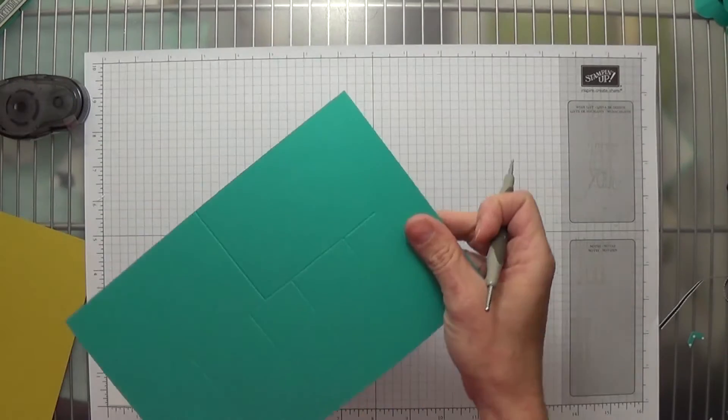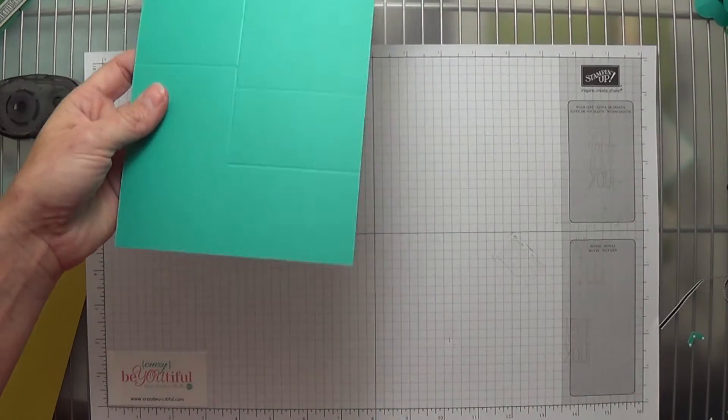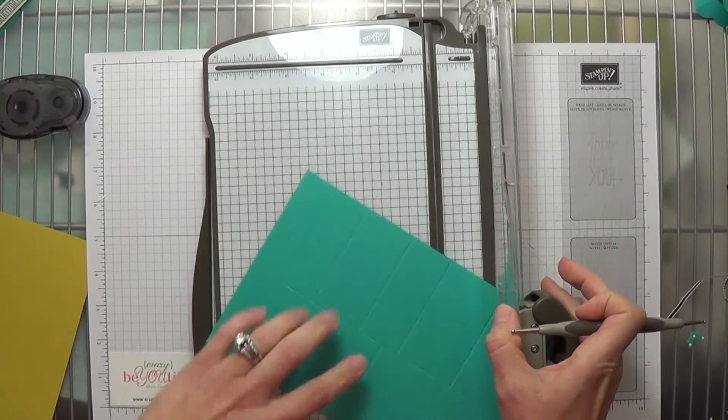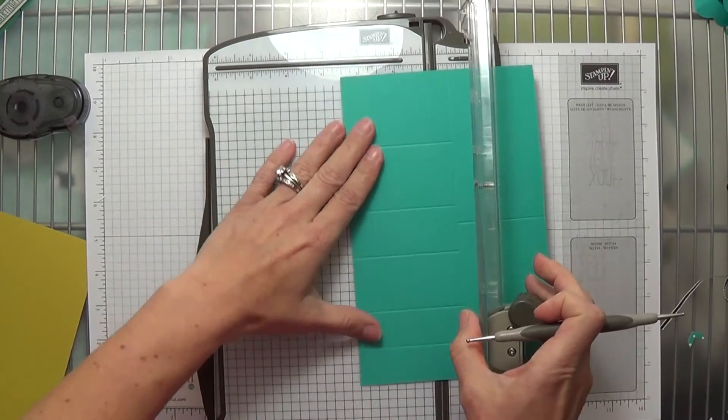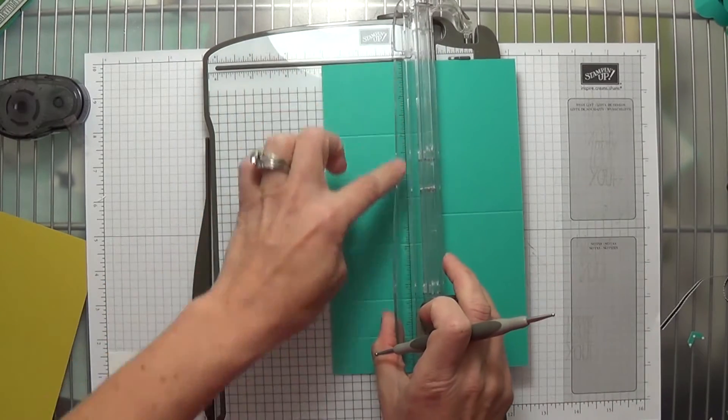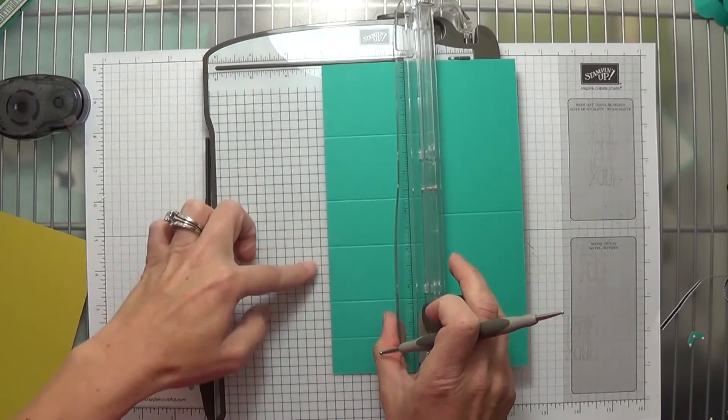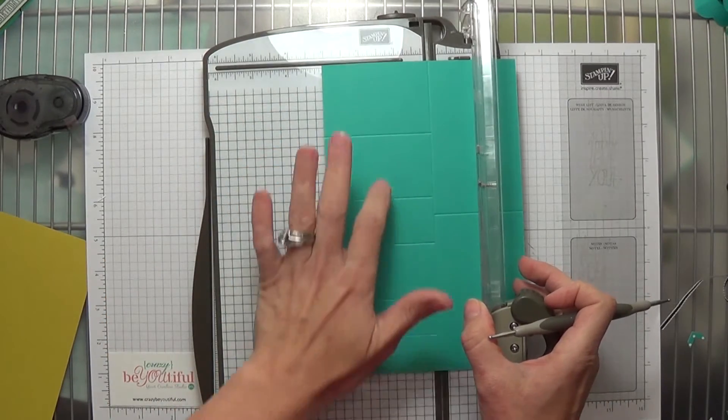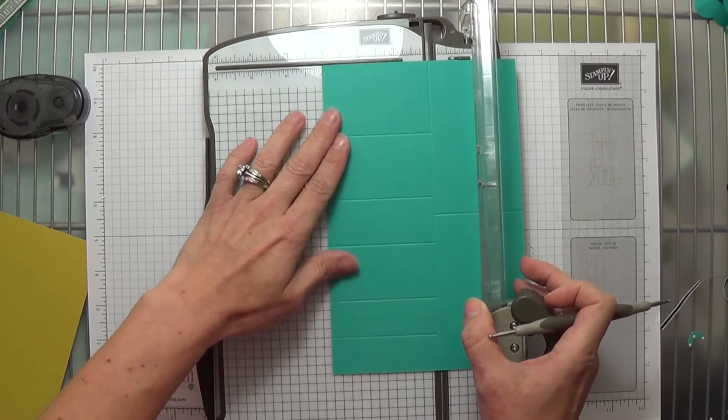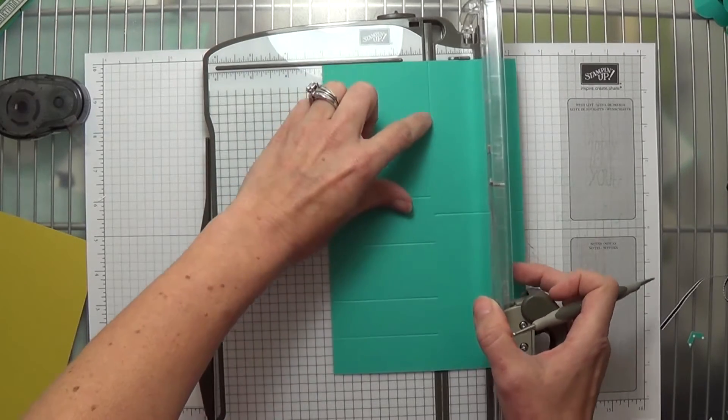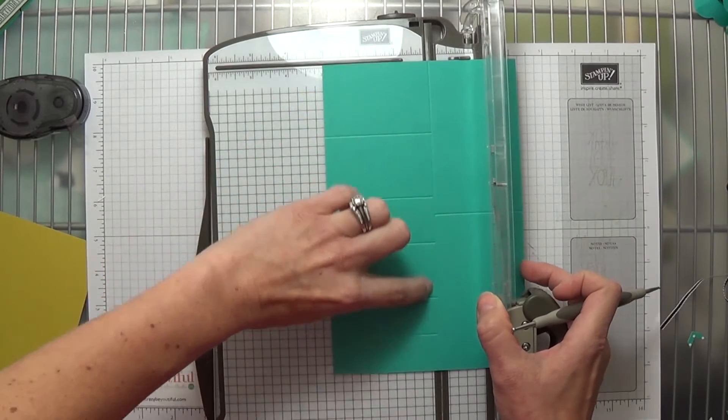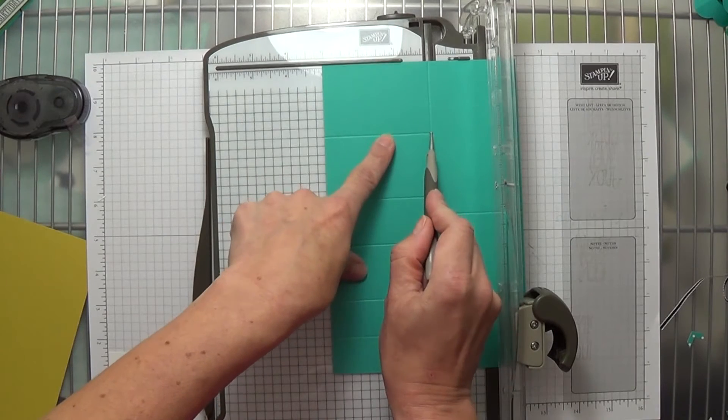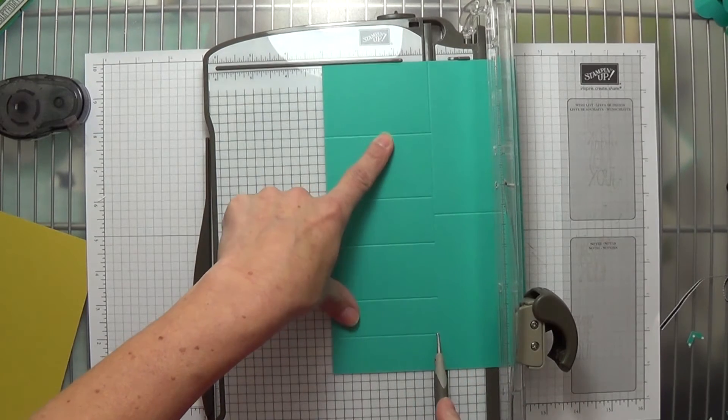Now you're going to switch to your paper trimmer. If yours has a ruler on it, you're going to take that 3 inch section - it has all the multiple score lines - line it up right here at 3 inches, and we're going to follow that score guide through the middle to trim it. We're going to trim it from this point here down to here.